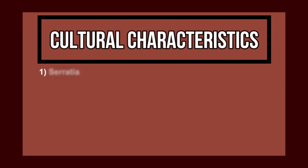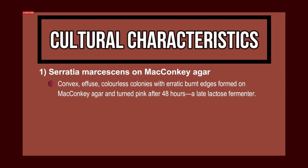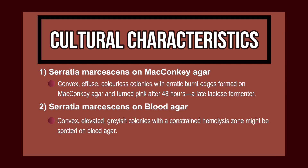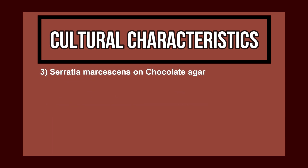On MacConkey agar, convex effuse colorless colonies with erratic burnt edges form and turn pink after 48 hours — it is a late lactose fermenter. On blood agar, convex elevated grayish colonies with a restricted hemolysis zone may be spotted. On chocolate agar, the colonies are large and gray.